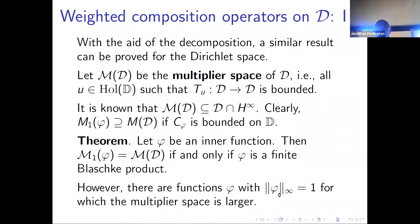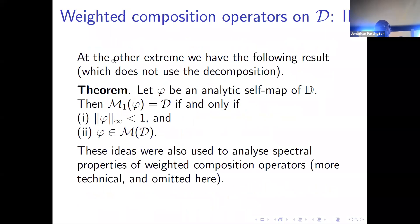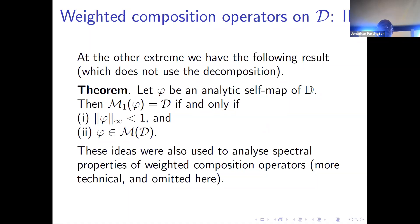At the other extreme, you can find functions phi with sup norm one on the disk for which the multiplier space is large. And there is a complementary result that doesn't use the decomposition: the multiplier space of phi can be as small as the Dirichlet space if and only if phi is a multiplier of the Dirichlet space with norm strictly less than one. In that 2015 paper, we went on to look at the spectral properties of weighted composition operators.